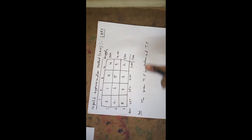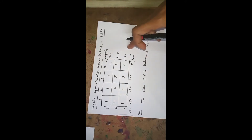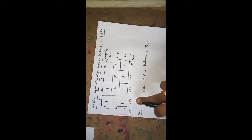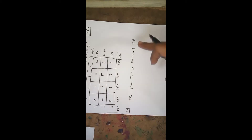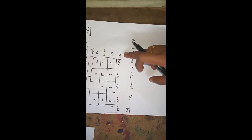To find the solution in this method, first check whether the given problem is balanced or not. If you add the sum of supplies you get 1200, and if you add the sum of demands you also get 1200. Therefore the given TP is a balanced TP. If it is balanced, then only we proceed further.